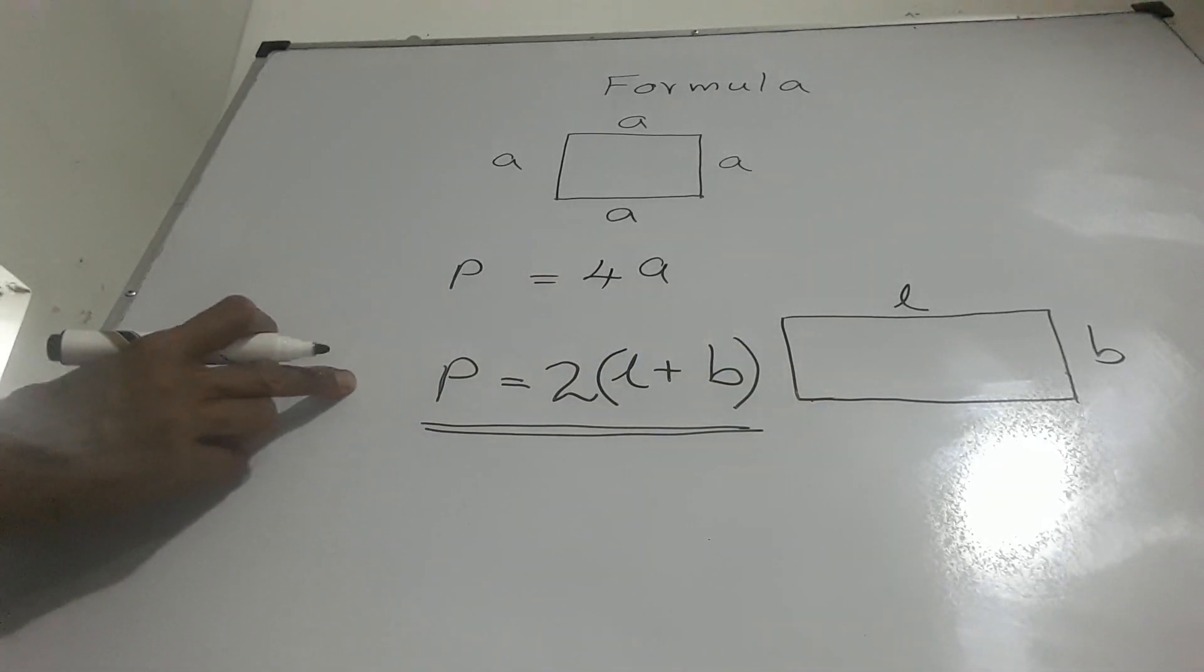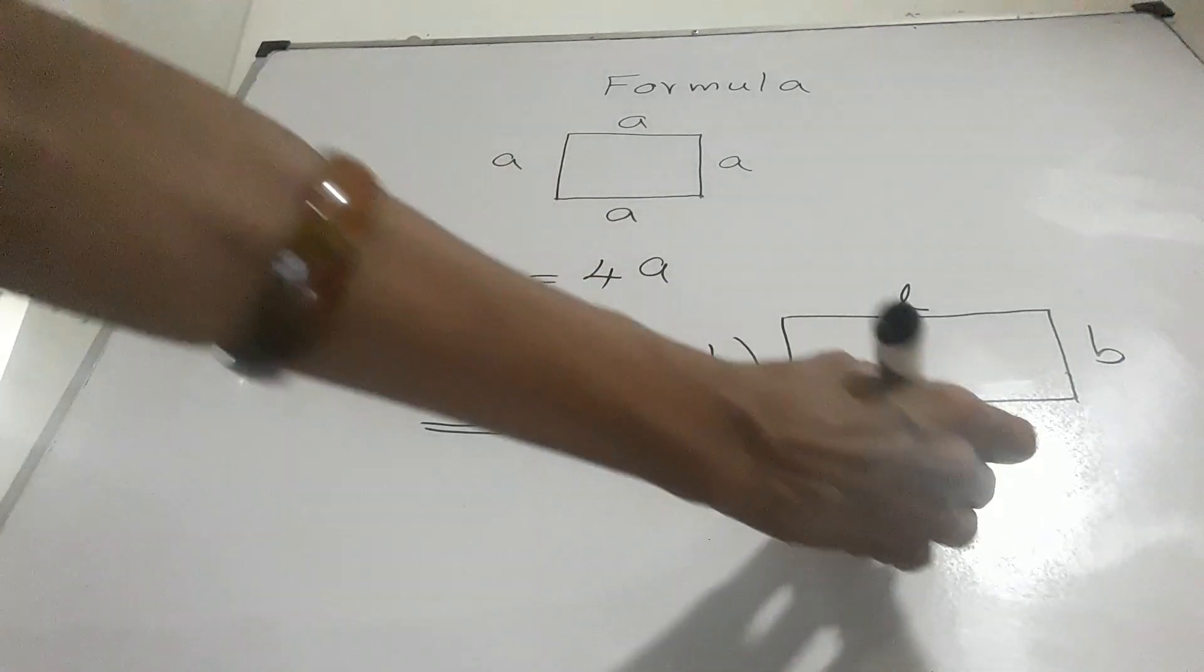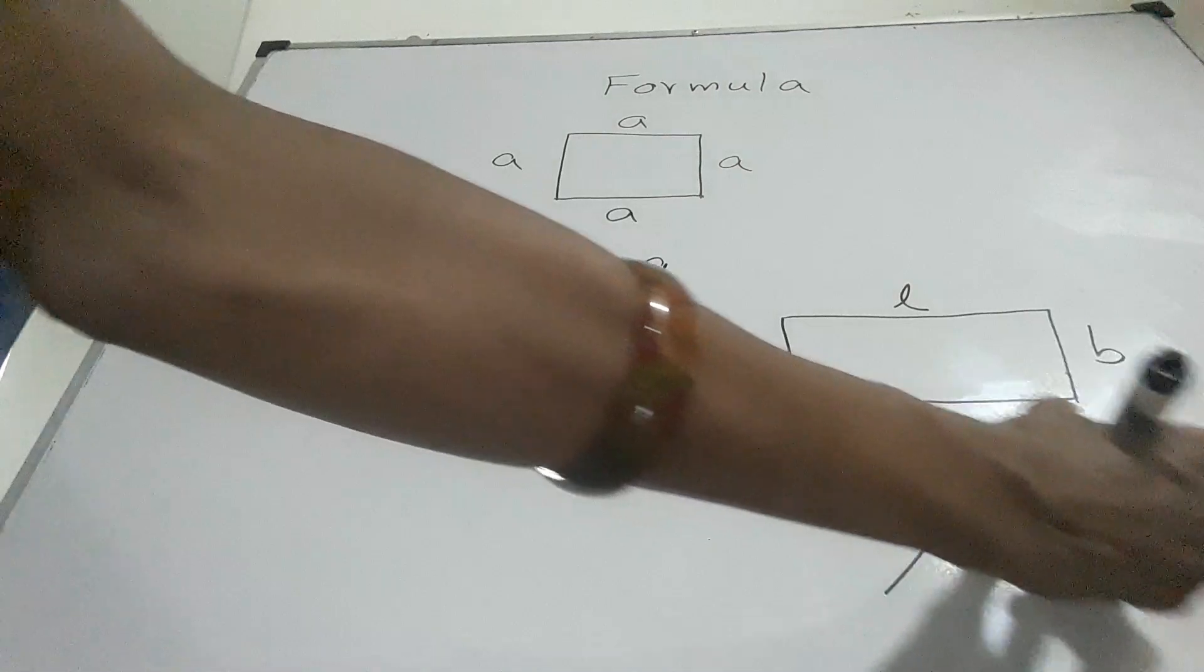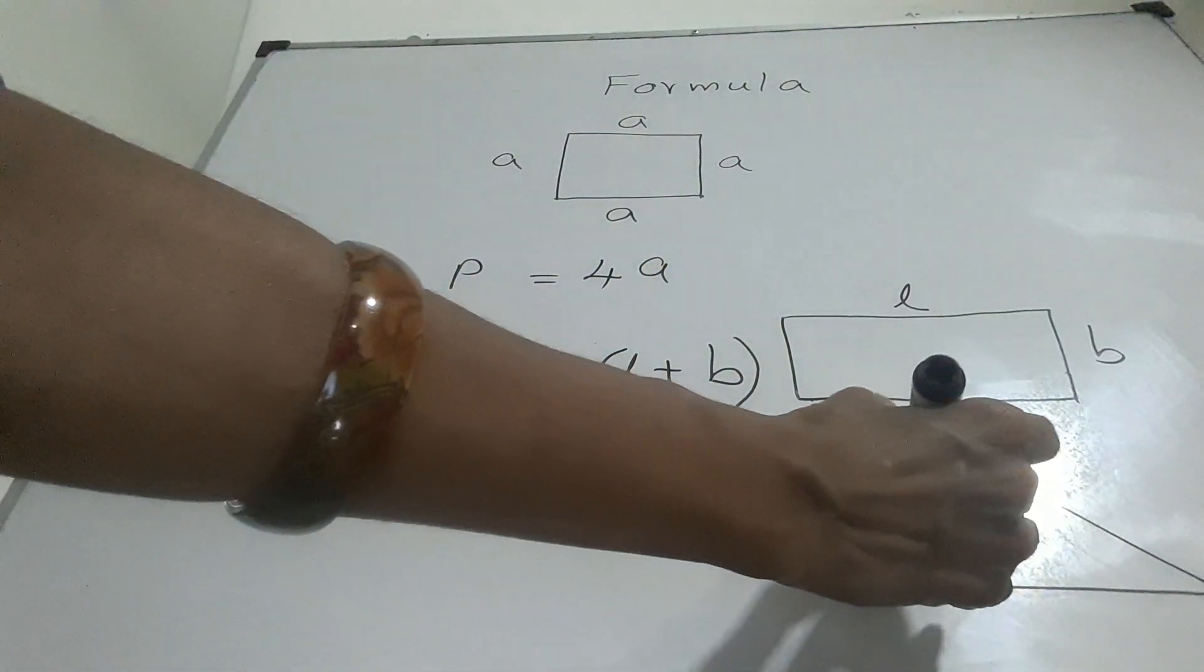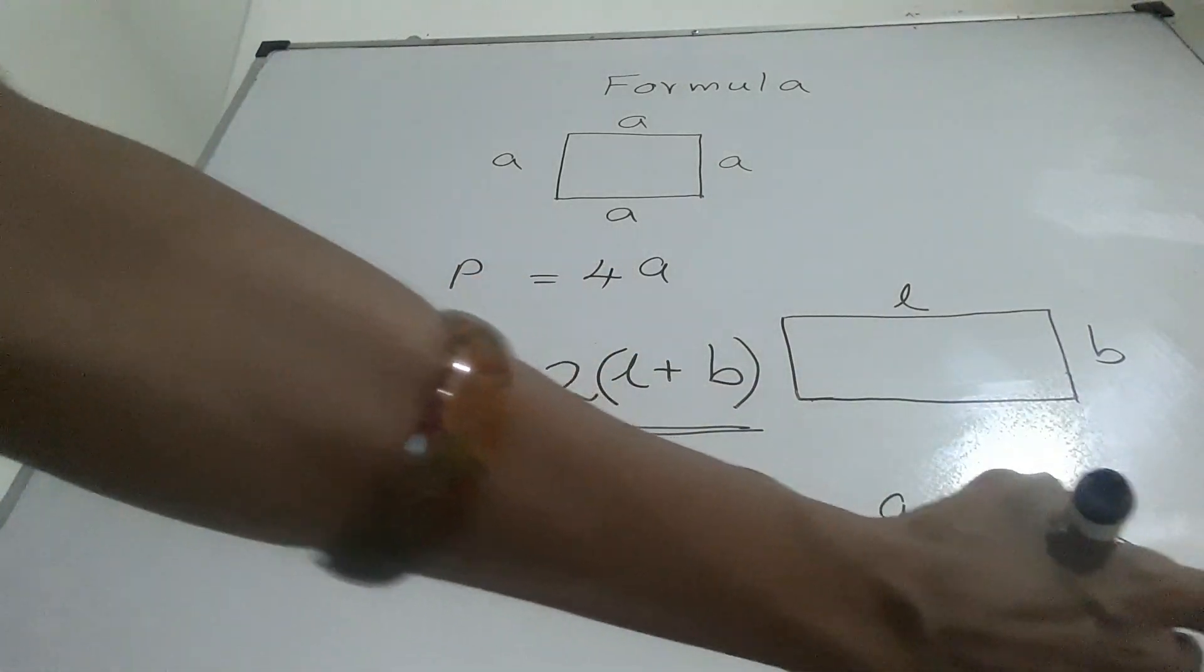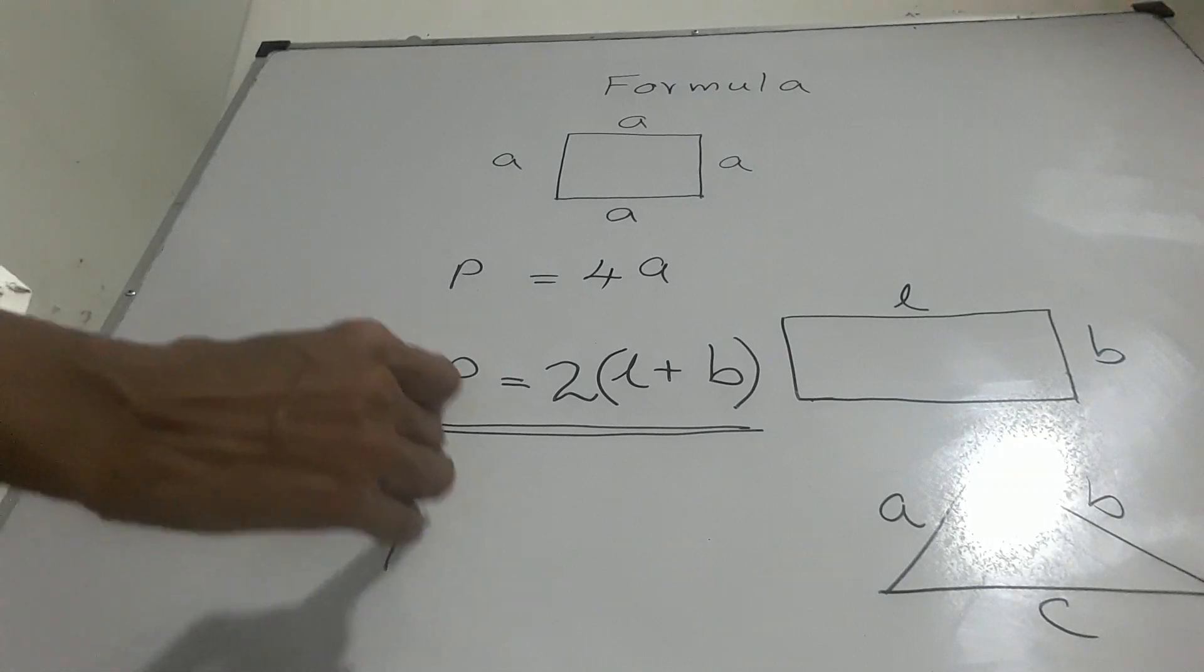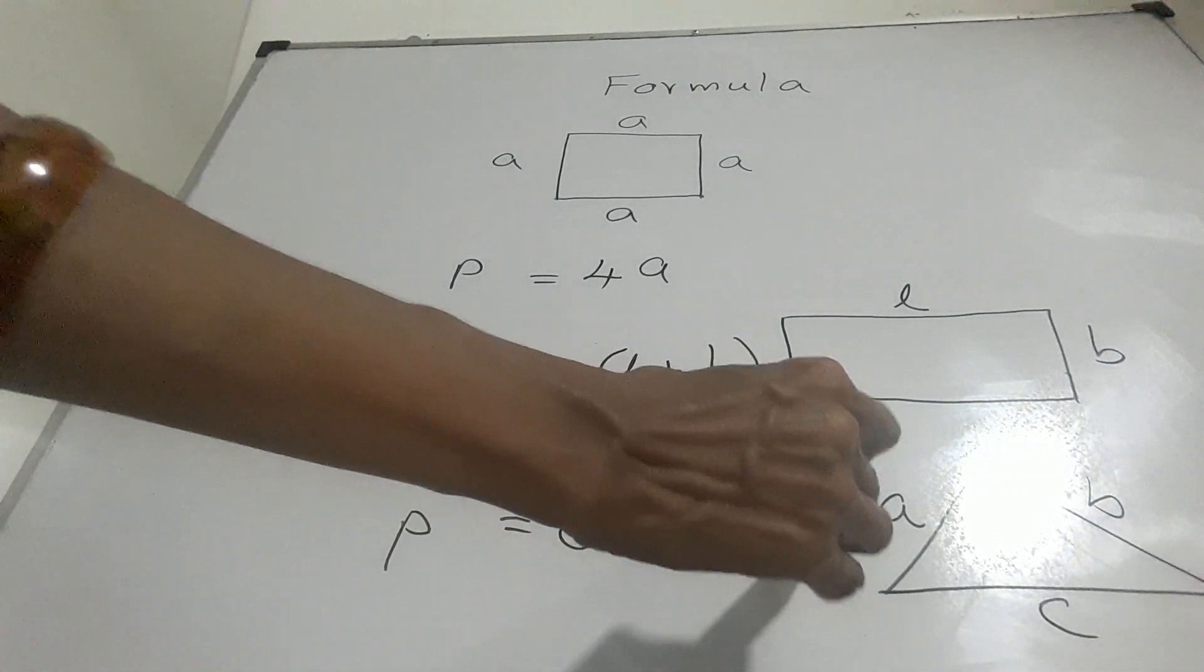Subject of the formula is P. Here this is a triangle. Side length of this triangle is A, B and C. Now perimeter is equal to A plus B plus C.